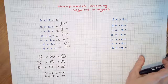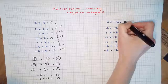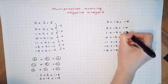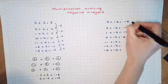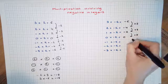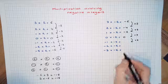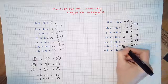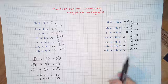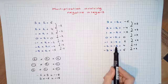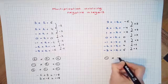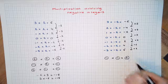Now let's have a look at this pattern over here. We know that 3 times negative 2 is negative 6, 2 times negative 2 is negative 4, 1 times negative 2 is negative 2, and 0 times negative 2 is 0. In this case the pattern is increasing by 2. So if the pattern continues to increase by 2, the next numbers are 2, 4, and 6. You can see now that the product of two negative numbers is a positive number — that is, a negative times a negative will give a positive answer.